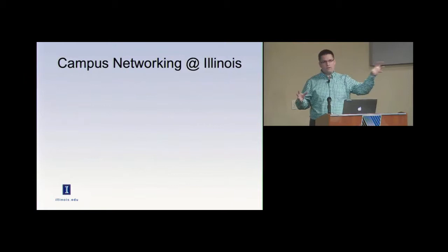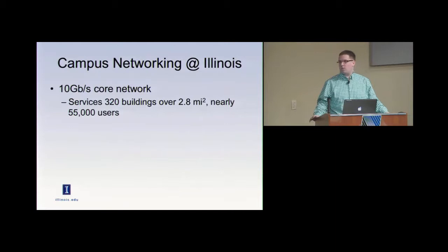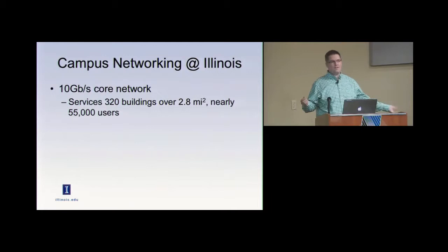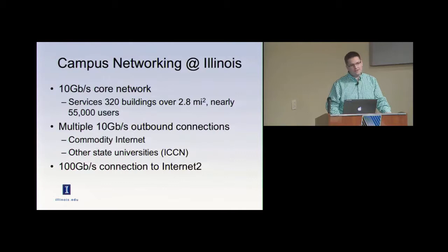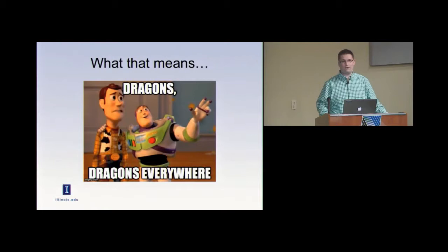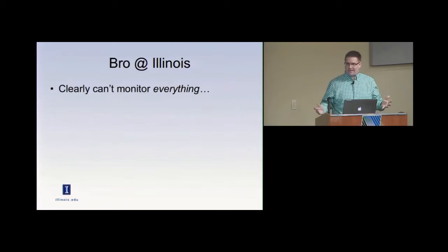Let's do some brief background. We've got a 10 gig core network — they just upgraded to 40 gig, but we're not really utilizing it, so it's effectively still a 10 gig core network servicing about 320 buildings spread over about three square miles, and that network services about 55,000 people. As Nick was talking about yesterday, what that means for the security people in the room is: dragons. There are dragons everywhere. The bad stuff is everywhere. We can't just select one point and put BRO there — BRO has to be in lots and lots of places.